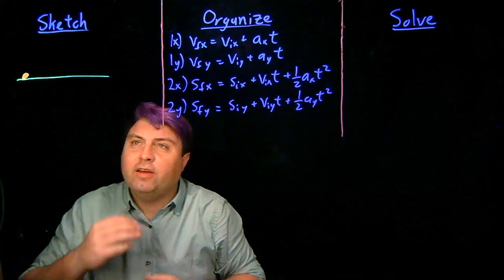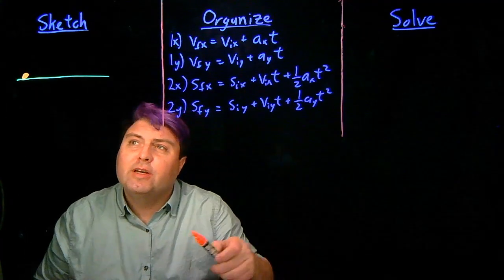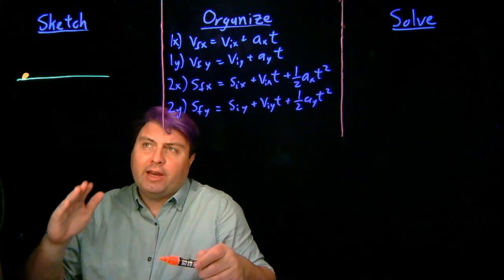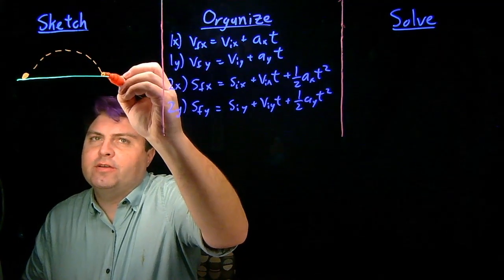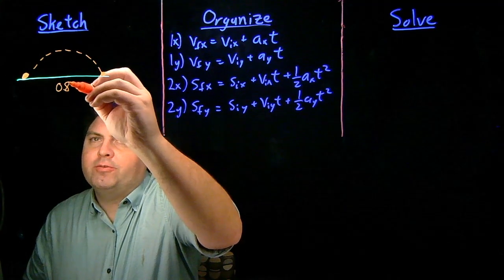We have a toy frog here on nice level ground. It's going to jump at a 40 degree angle relative to the ground. And when it jumps and lands back on this level ground, it will have traveled 0.8 meters.